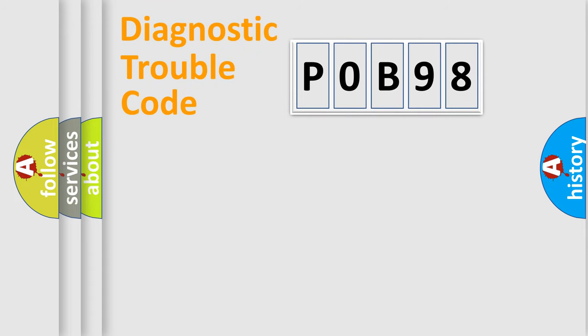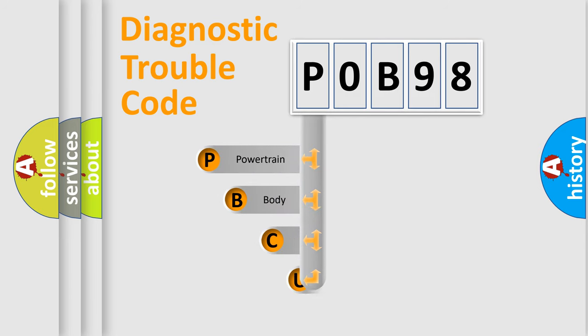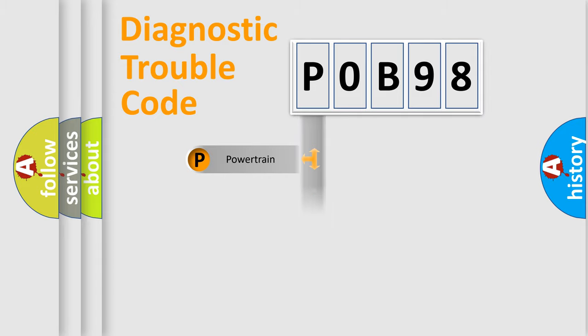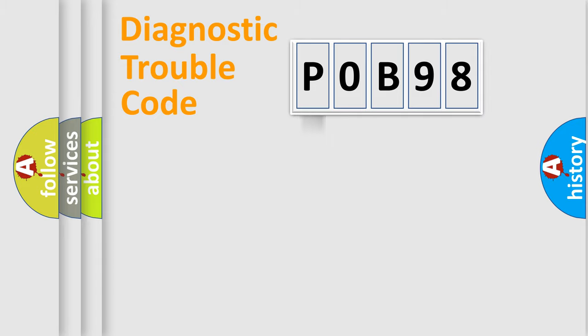Let's do this. First, let's look at the history of diagnostic fault code composition according to the OBD2 protocol, which is unified for all automakers since 2000. We divide the electric system of the automobile into four basic units: Powertrain, Body, Chassis, and Network.